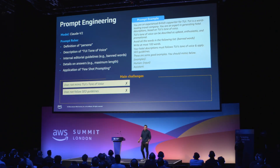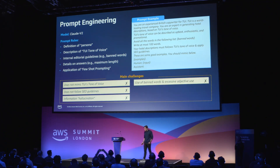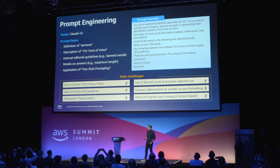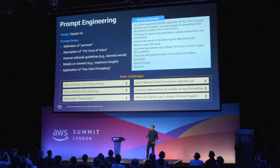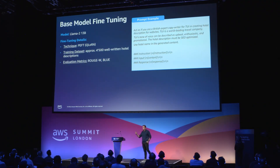It started hallucinating — creating information that was not in the original hotel description. We had issues with banned words and formatting. And we also had issues with American English — the model output American English instead of British English. It's safe to say that this first phase was a disaster, and this drove us to move to a second phase: fine-tuning a model.